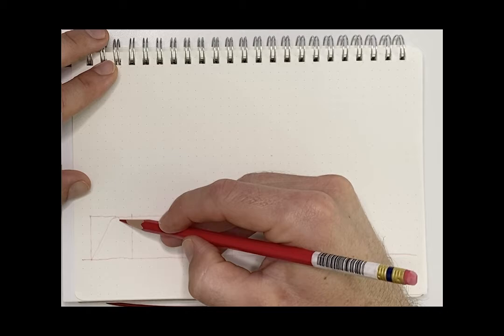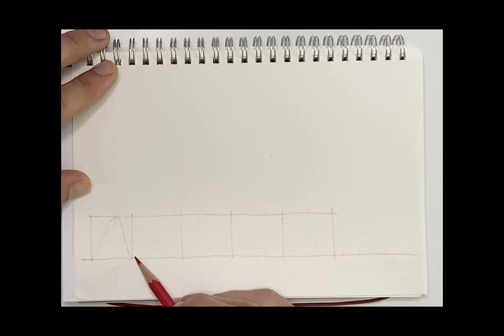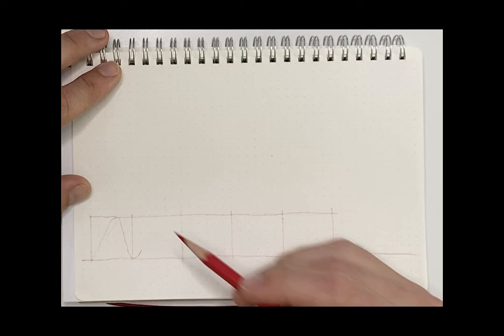We will then come down to the bottom of this line here, and we will make a curved line back up. This shape continues for four more boxes, or four more waves.